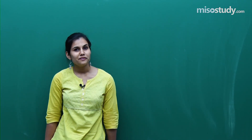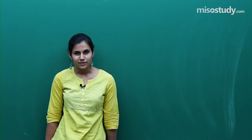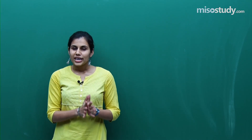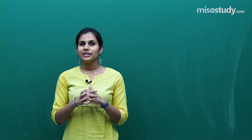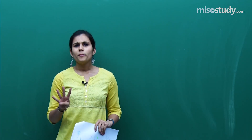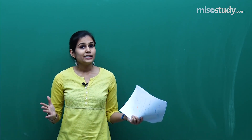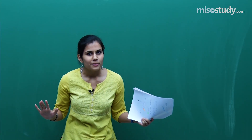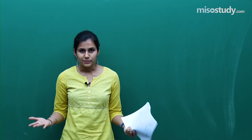Out of 12 lakh students who sat for this paper, only 2.24 lakh students would be eligible to take the JEE Advanced paper 2018, which is scheduled to be held on 20th May 2018. Going back to the mathematics section: there were 30 questions, 120 marks, 4 marks for each correct response, minus 1 for each wrong response, and no negative marking for unattempted questions.